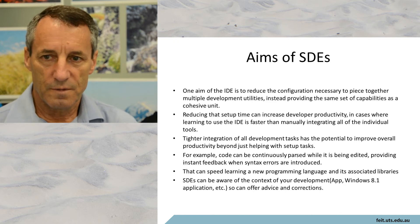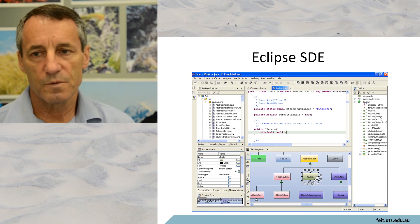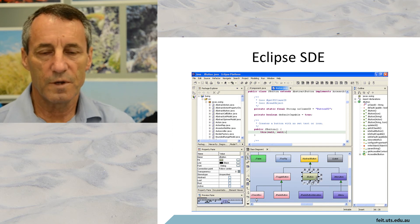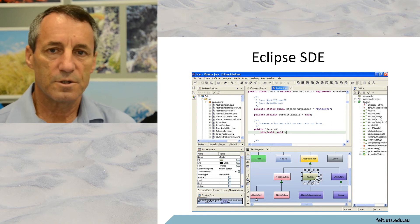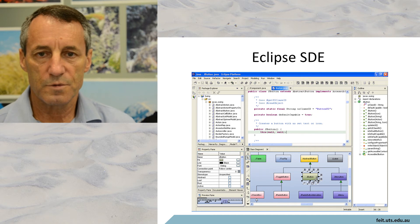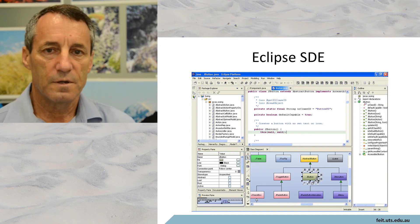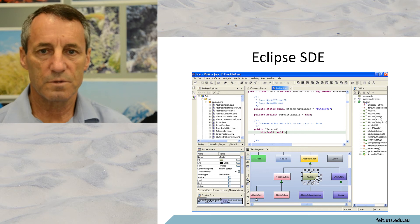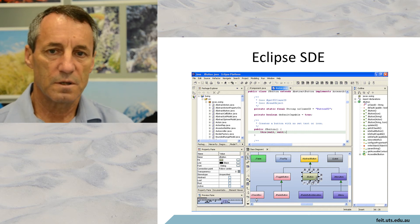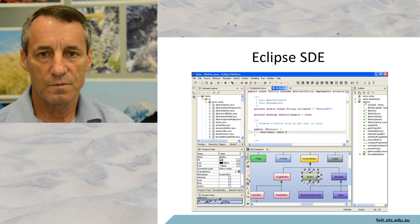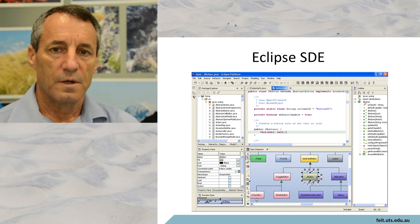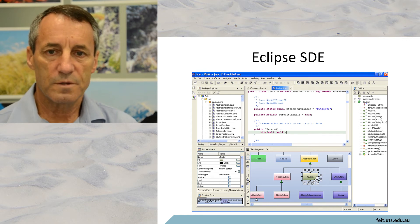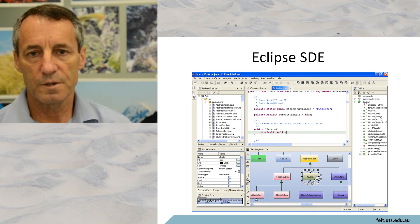Some examples of software development environments. The first one is the Eclipse software development environment. I've just taken a screenshot from the Eclipse SDE. This particular screenshot shows the navigation pane on the left, the properties pane also down on the lower left. There is an editor pane that shows what the actual code is, and this is some part that you might change. There's a class diagram — you can introduce classes and make connections between classes. And there's a pane to show you all the methods within a specific class. So you have quite a lot of information there at your disposal.